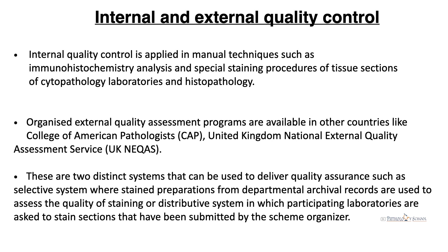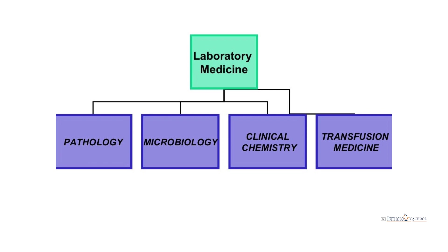The types of quality controls include internal and external quality control. Internal quality control is applied in manual techniques such as immunohistochemistry analysis and special staining procedures in cytopathology and histopathology laboratories. External quality control assessment programs are available in countries like America and the United Kingdom. These include a selective system, where stain preparations from departmental archival records are used, or a distributive system, where participating laboratories stain sections submitted by the scheme organizer.